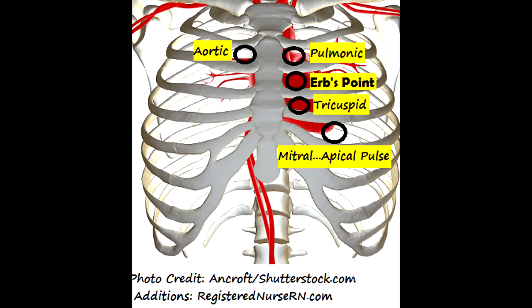So A is for aortic, P in 'patients' is for pulmonic, 'effectively' is for Erb's point — which is just the halfway point between the base and the apex of the heart with no valve location there. Then T is for tricuspid, and M in 'medicine' is for mitral.